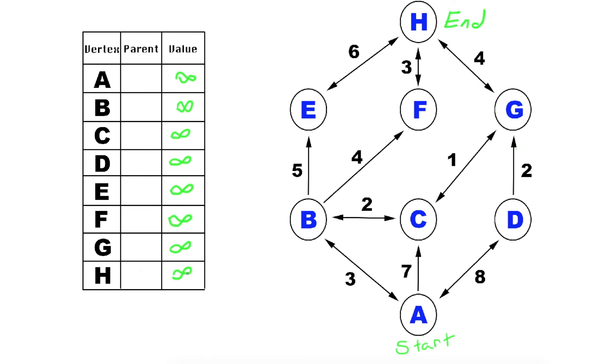And then value. We make all of them infinity to begin, so we can always find a shorter distance than infinity. Now the first thing we're going to do is get rid of the infinity value for A, because that's our starting point, and make it a zero.